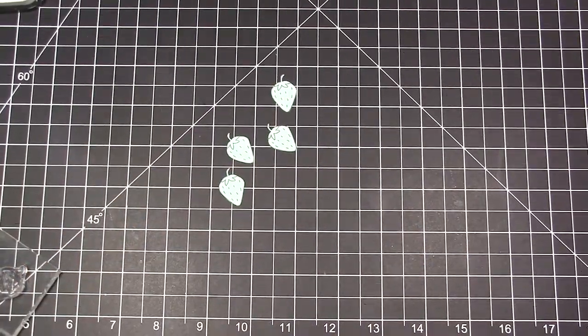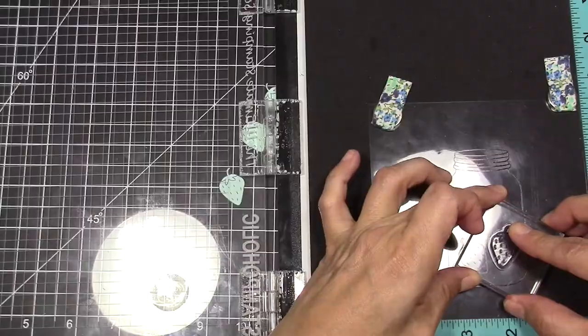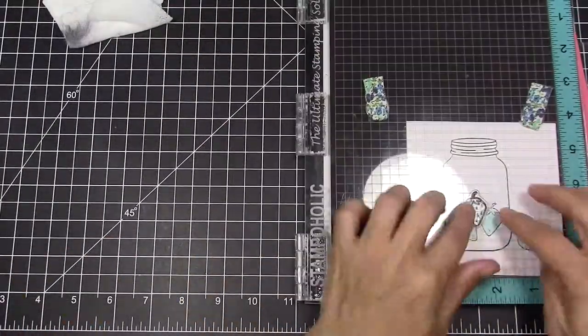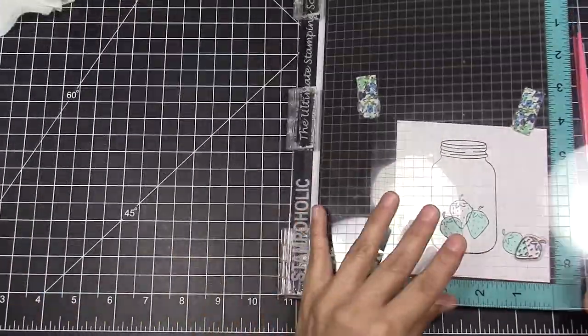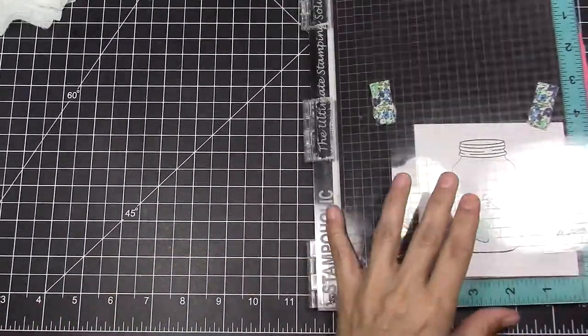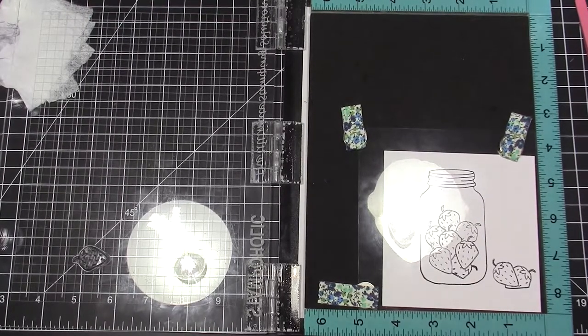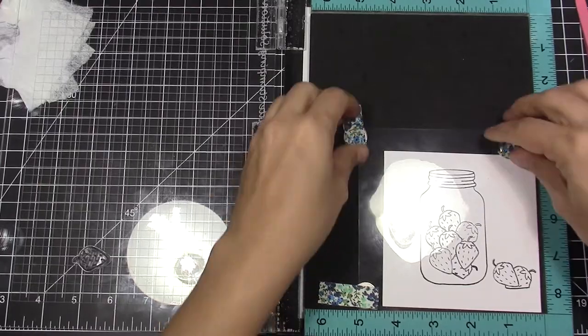I am stamping strawberries on Post-it tape. I stamped a jar on acetate. Now I'm stamping the strawberries on acetate using - oh my god I forget the name of that ink - it's called StazOn, okay.